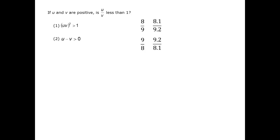Let's do that starting with statement 1 alone. Statement 1 tells us that uv squared is greater than 1. We already knew that uv was positive. The fact that it's greater than 1 when squared means it was already greater than 1.